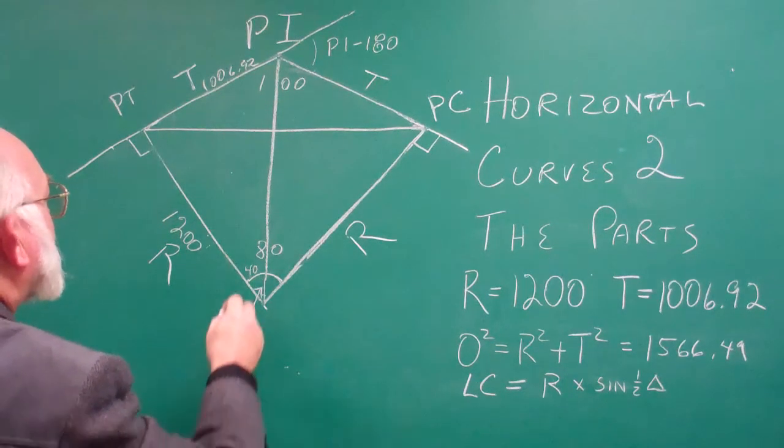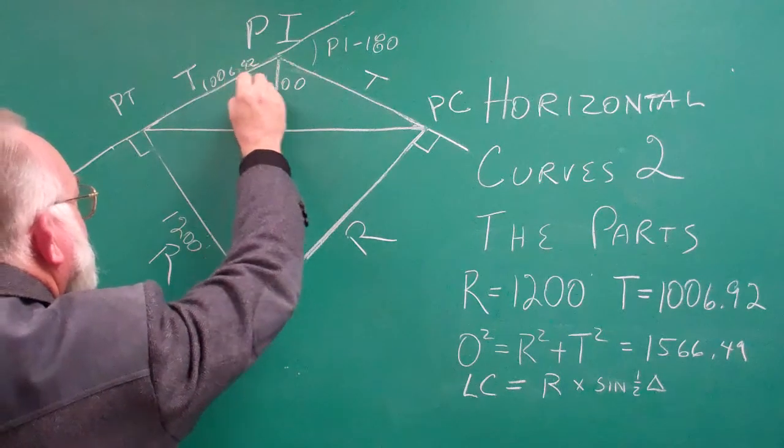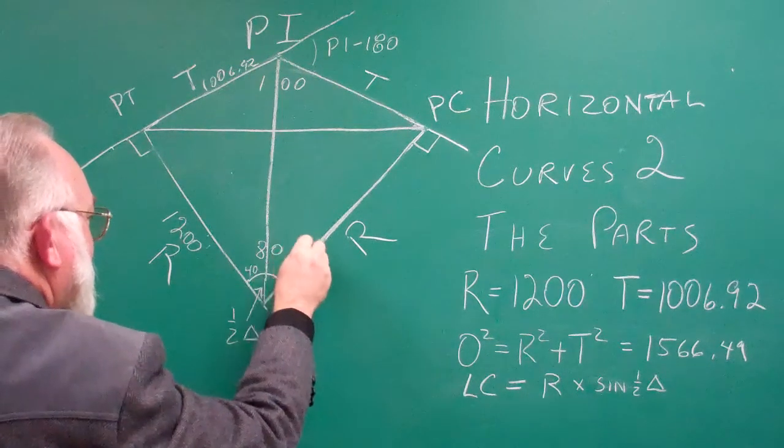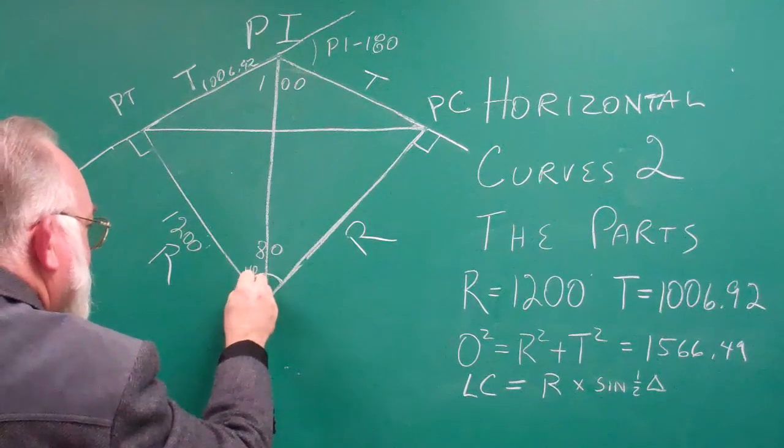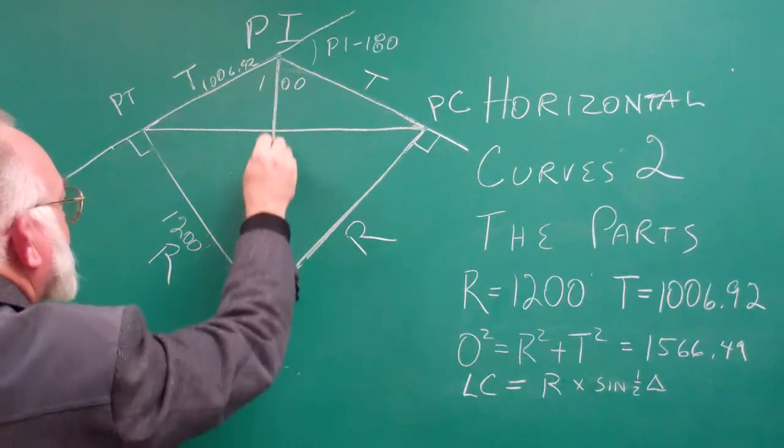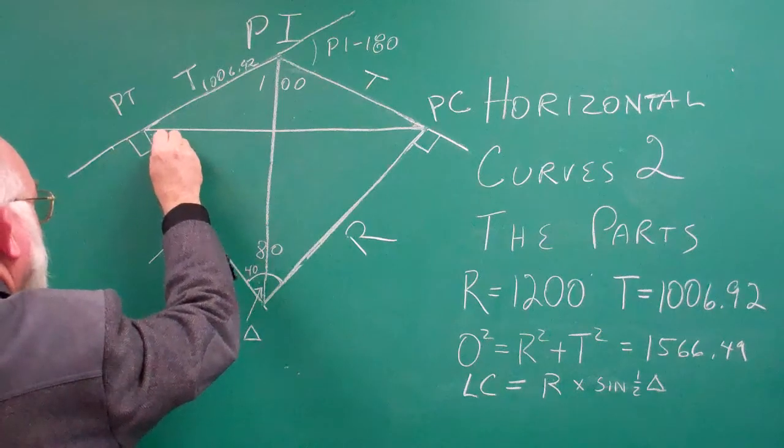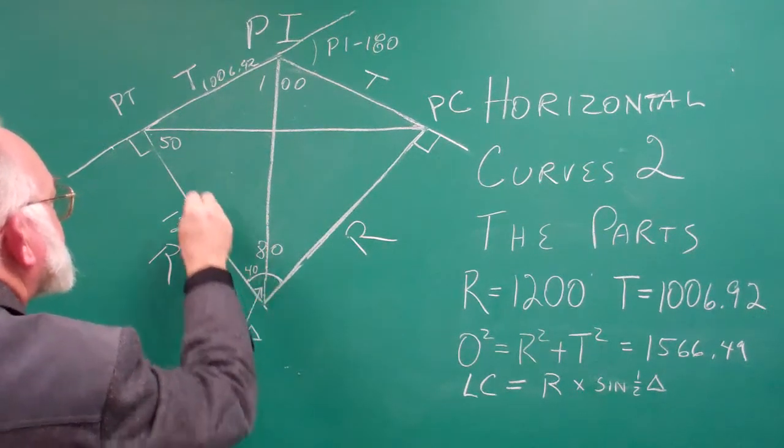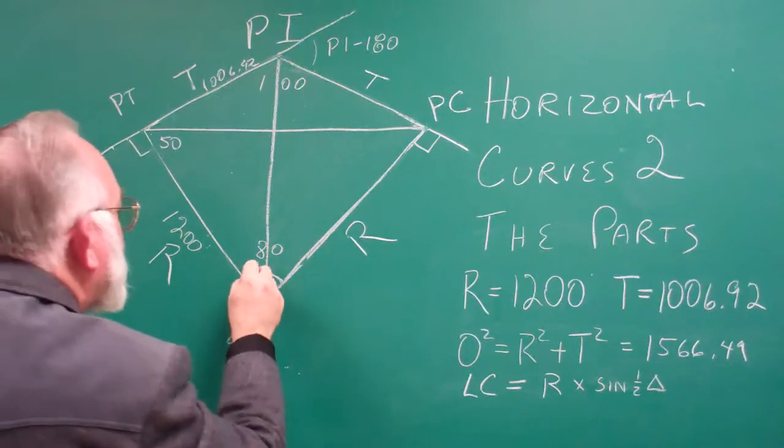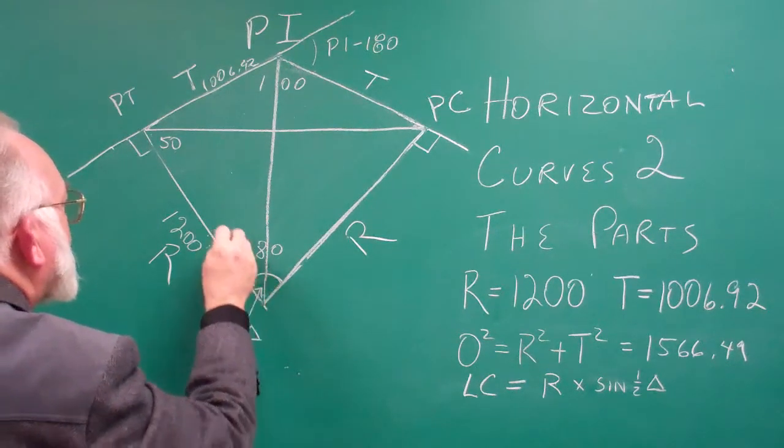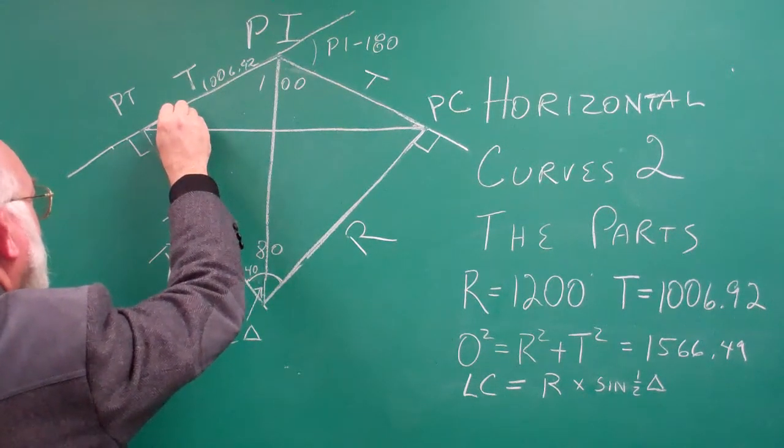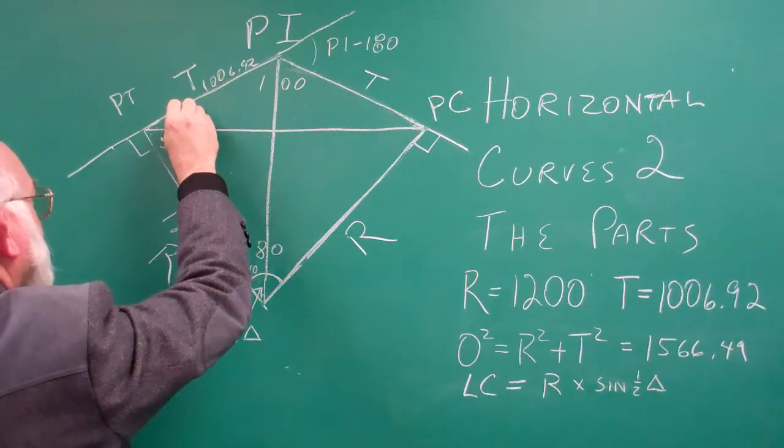You know that based on the fact that this angle is 100 degrees, this angle is 80. This angle here, half of that is 40. This is a right triangle, therefore this angle is 50. You also know that this is a right angle here, so this angle must be 40. Save that information for later.